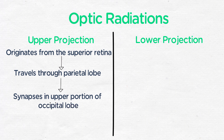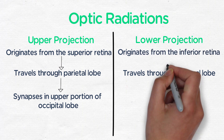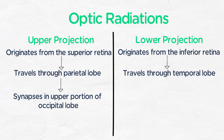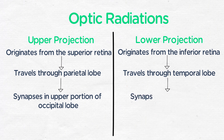The lower projection, which travels through the temporal lobe, also known as Meyer's loop, carries visual input from the inferior retina and represents the superior visual fields. This ultimately synapses in the lower portion of the occipital lobe.